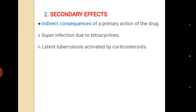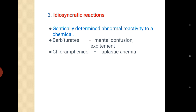The next type of adverse effect is the secondary effect — an indirect consequence of a primary action of the drug. Example: superinfection due to tetracycline, where a newer infection develops while the patient is on treatment for an existing infection. Another example is latent tuberculosis: the patient had recovered, but the TB is reactivated by corticosteroids because corticosteroids suppress the immune system, causing re-appearance of tuberculosis.